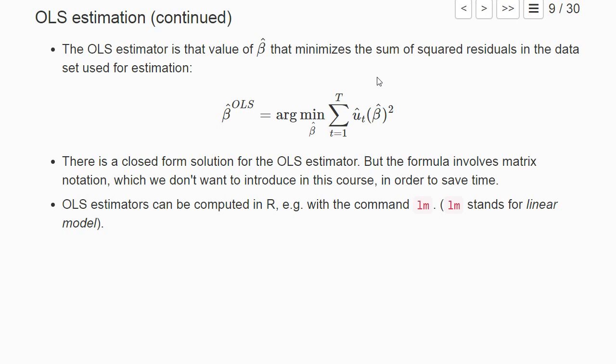It can be computed relatively quickly as long as we don't have so many explanatory variables. We can have quite a lot of observations, but if we have tens of thousands of explanatory variables, it would be difficult. Usually it goes very fast, and in R you can compute OLS estimators with the command lm, which stands for linear model.